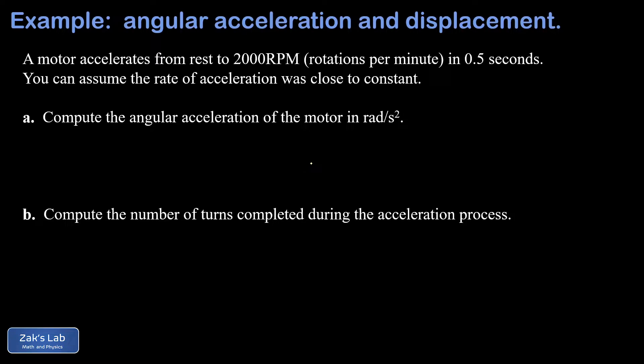In part a we want to compute the angular acceleration of this motor in radians per second squared. This requires some prep work. We need to get that final velocity of the motor in radians per second instead of rotations per minute.